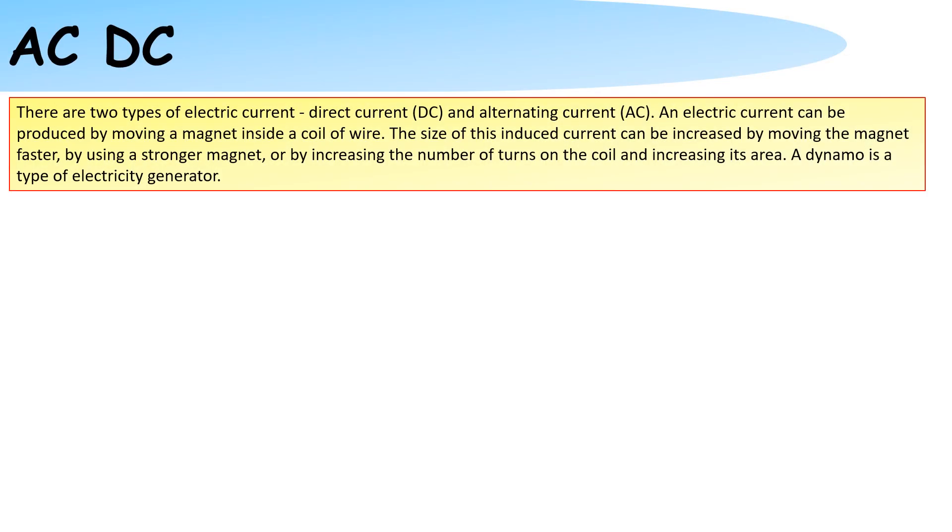There are two types of electrical current, direct current and alternating current. An electric current can be produced by moving a magnet from side to side in a coil wire.